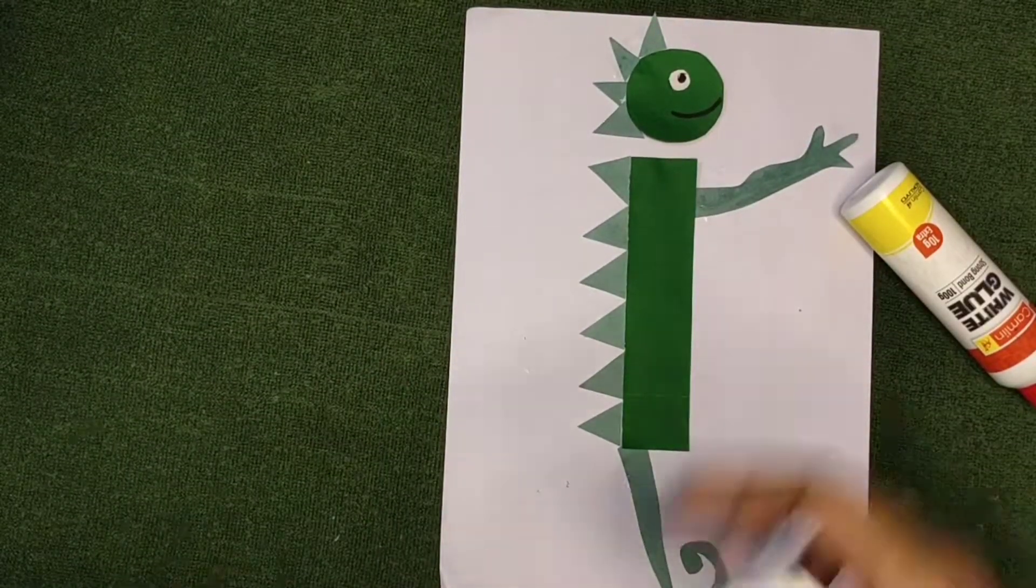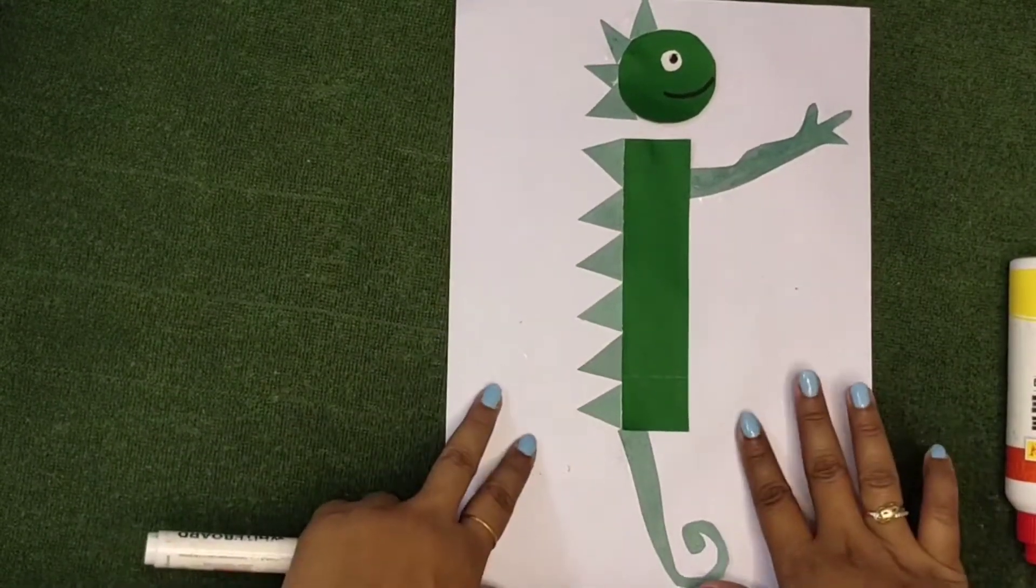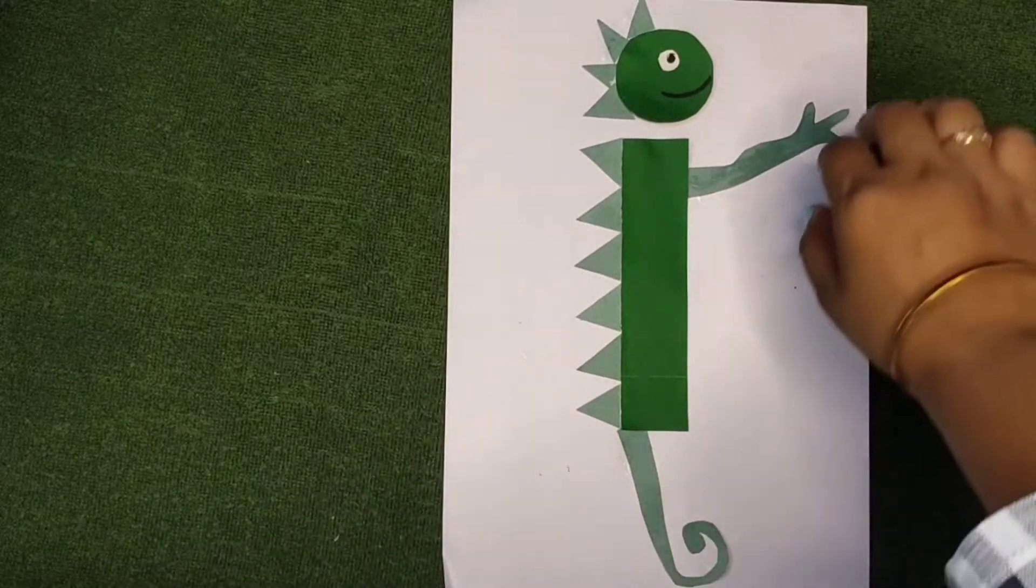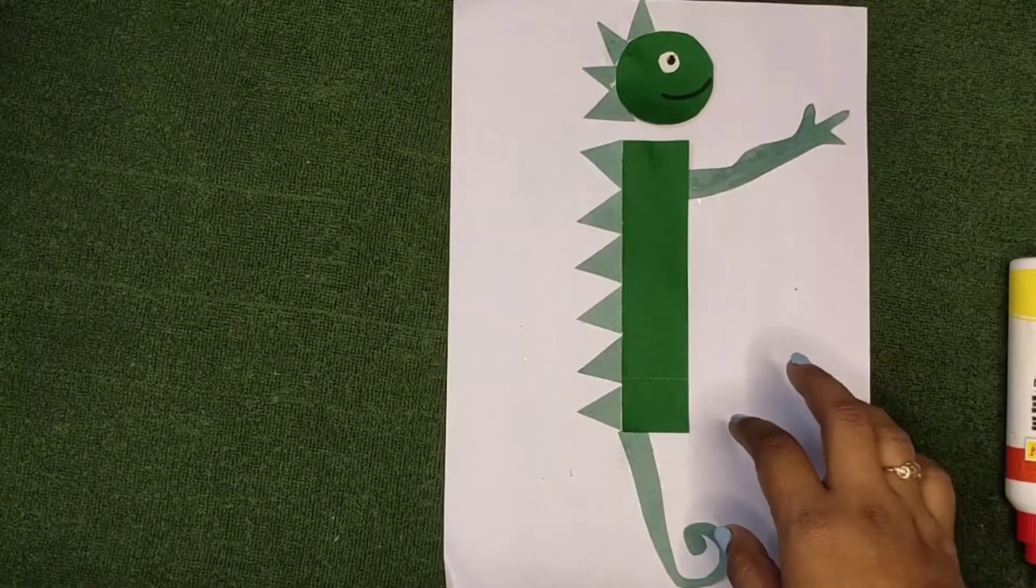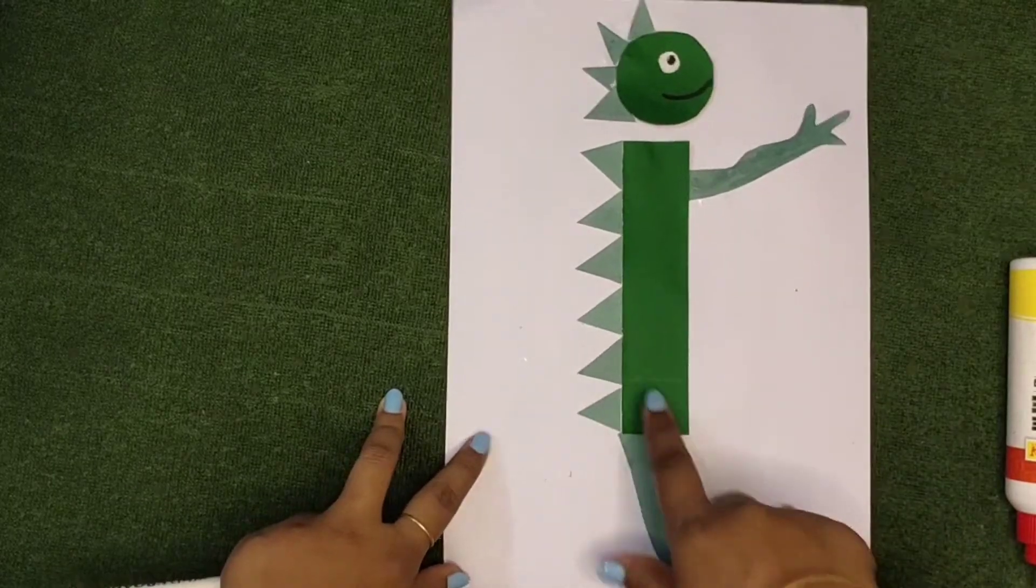So our small i craft is also ready. This is an iguana. And iguana says E. Means letter I says E. E iguana.